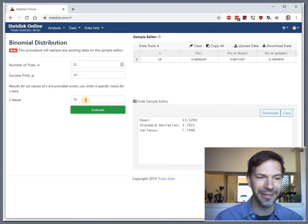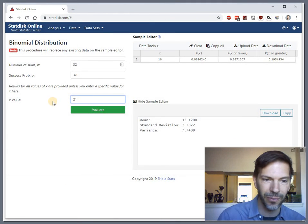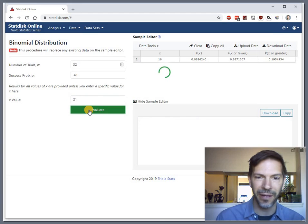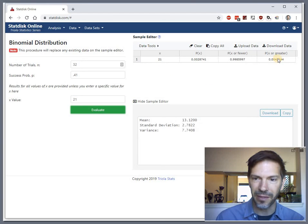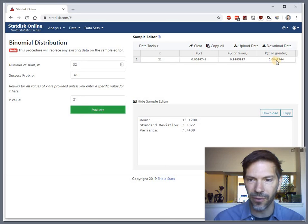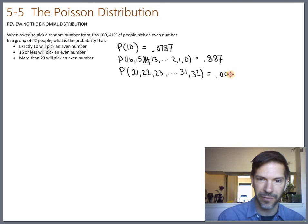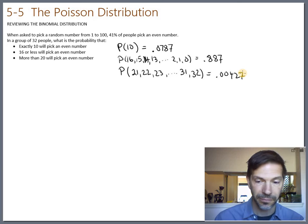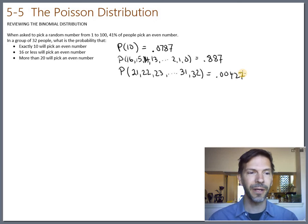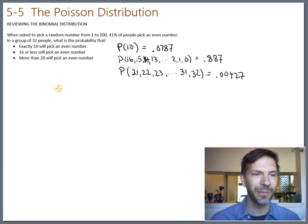Go back to StatDisk and put in 21 and evaluate. This last frame says what's the probability of 21 or greater than 21, and that's 0.00427. Fair enough. I just wanted to do a little review of the binomial. Now let's talk about the Poisson distribution.